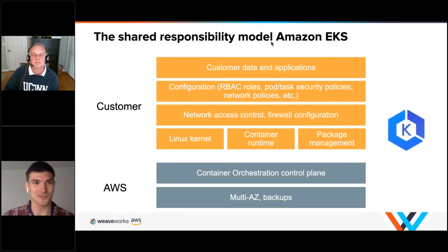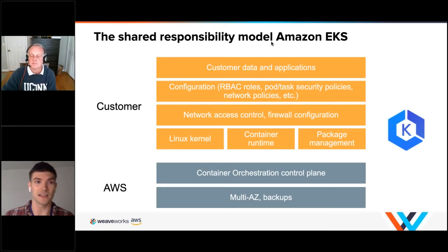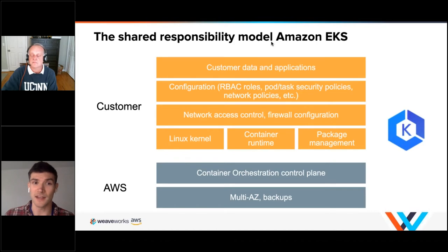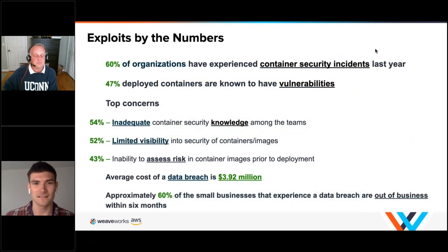When we break that down into actual terms, when we say 'data plane' we mean everything from the kernel of your hosts all the way to the data that's in memory inside the containers — everything in between: policy, RBAC, package management, runtime. AWS is really only responsible for a tiny bit, which is the control plane: etcd and the master nodes.